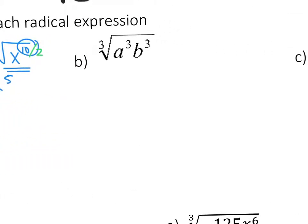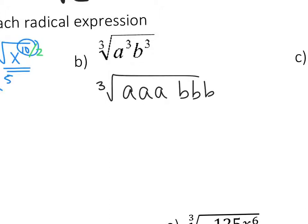Letter B — this is the cube root. So I write the cube root of A, A, A, B, B, B. Because this is the cube root, I'm taking them out in groups of 3. So A is on the outside, B is on the outside, and there's nothing on the inside. So my answer is just AB.